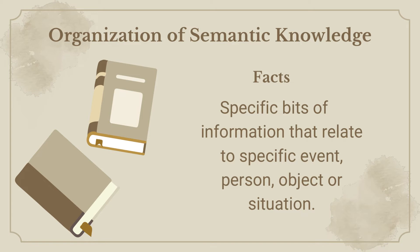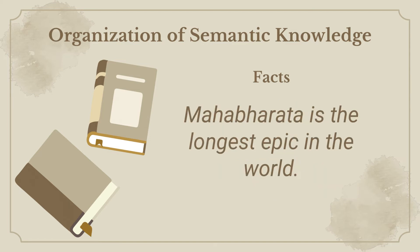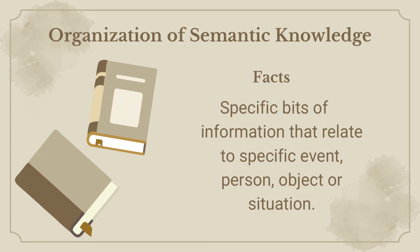The following are specific examples of facts. The first one is Christopher Columbus, an Italian-Spanish navigator, who sailed west across the Atlantic Ocean in search of a way to Asia. The second one is that the Mahabharata is the longest epic in the world. These bits of information are very specific and possess very limited capacity for providing explanation. For instance, the knowledge about Christopher Columbus as a navigator cannot help students solve their problems in math.